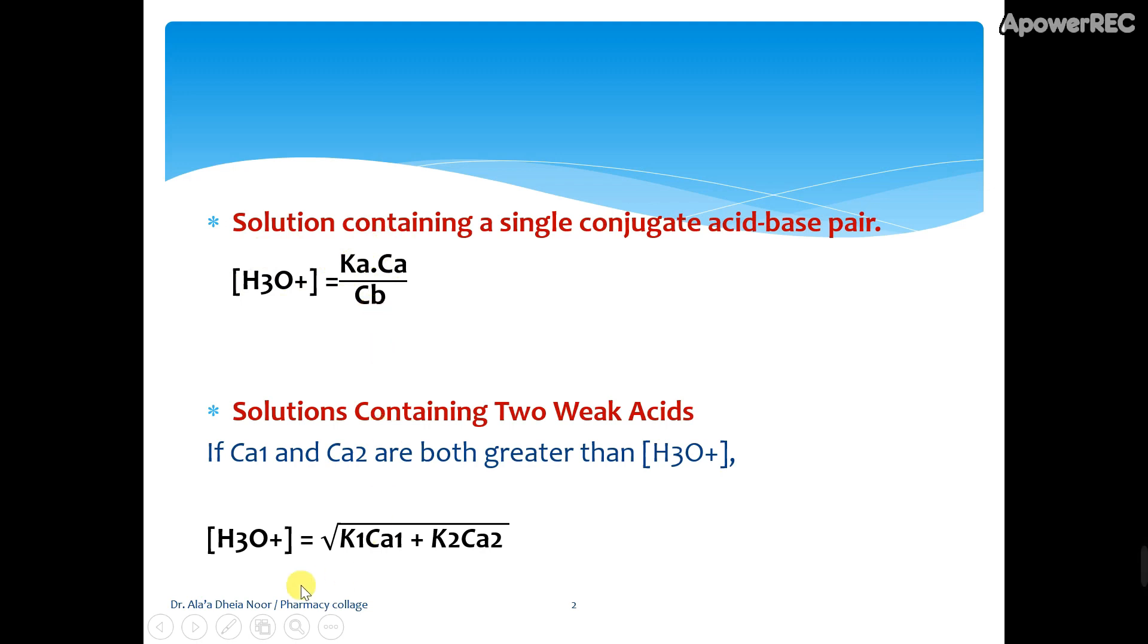If a solution contains two weak acids, meaning two Ka values, Ka1 and Ka2, with concentrations Ca1 and Ca2, these are the initial concentrations of both weak acids.